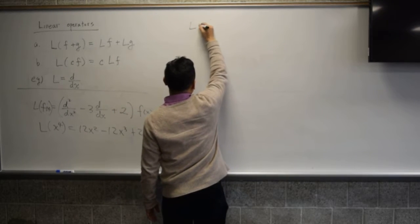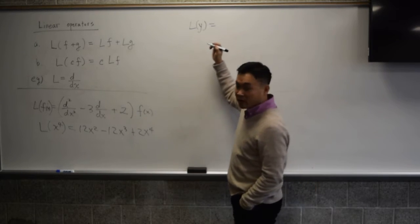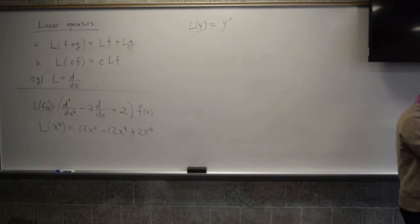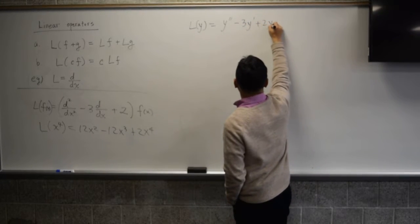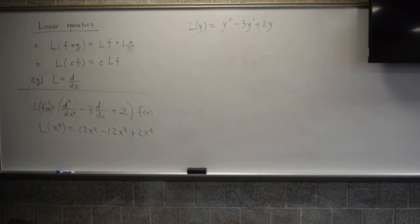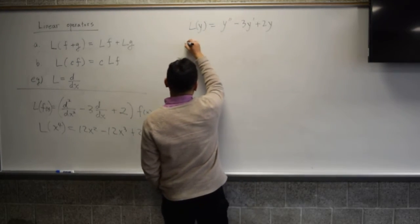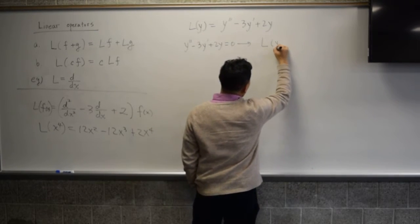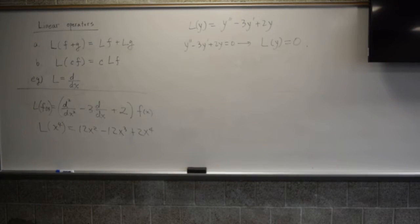What is L applied to y? That gives y″ − 3y′ + 2y. So you can rewrite the differential equation y″ − 3y′ + 2y = 0 simply as L(y) = 0.